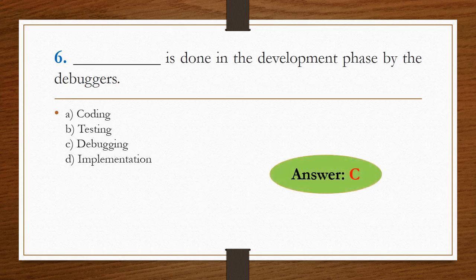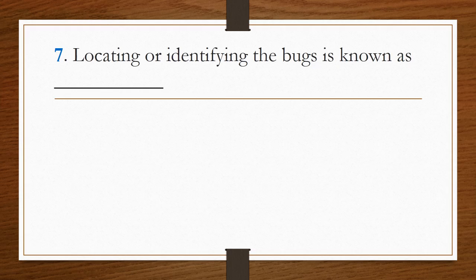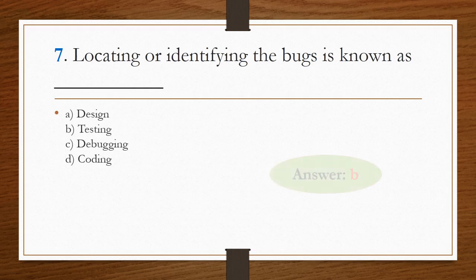Next question: locating or identifying the bugs is known as what? Options are design, testing, debugging, and coding. Locating or identifying the bugs is known as testing.